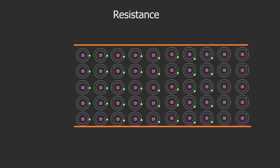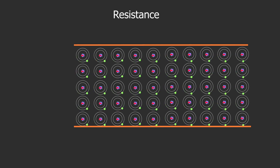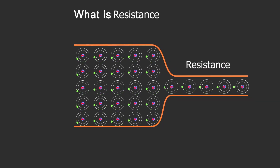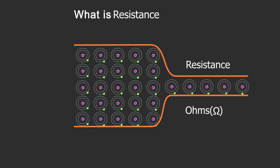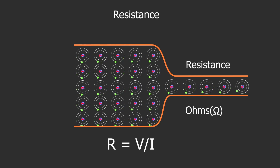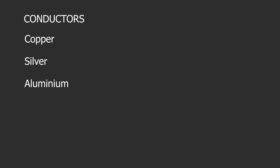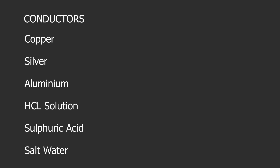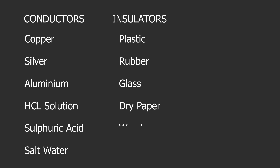What is resistance? Electrons move through a conductor when electric current flows. All materials impede the flow of electric current to some extent; this characteristic is called resistance. Resistance increases with an increase in length or a decrease in cross-section of a material. The unit of measurement for resistance is ohms, with the symbol being the Greek letter omega (Ω). A resistance of one ohm means a conductor allows a current of one amp to flow with a voltage of one volt. Materials that allow many electrons to flow freely are called conductors, such as copper, silver, aluminium, hydrochloric solution, sulphuric acid, and salt water. In contrast, materials which allow few electrons to flow are called insulators, such as plastic, rubber, glass, and dry paper.